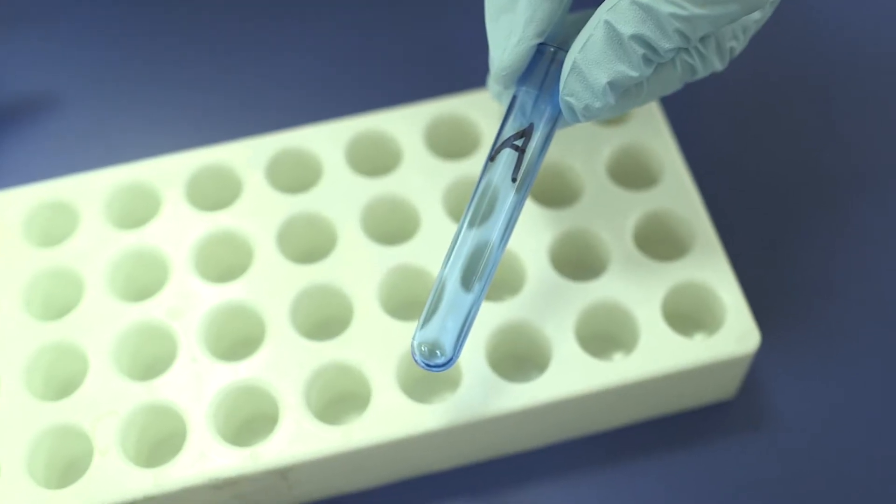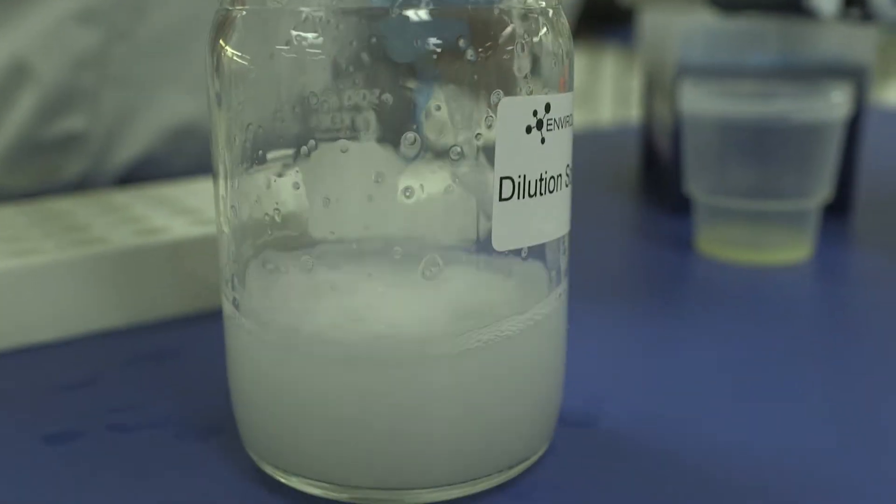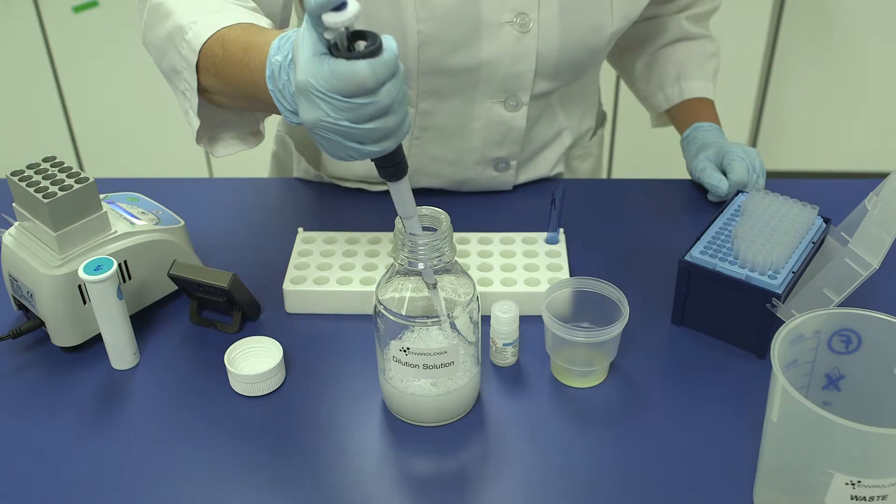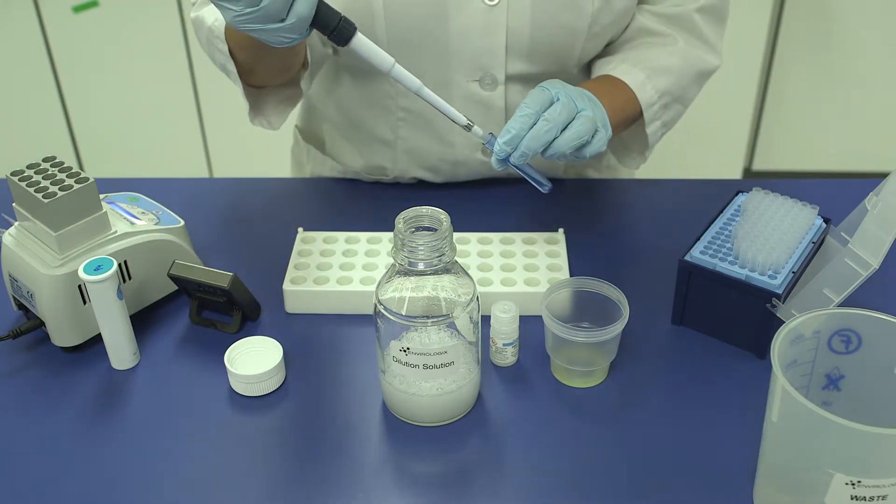Dilution A, Step 1. Add 400 microliters of well-mixed dilution solution and 100 microliters of clarified extract to a clean tube. Mix well.